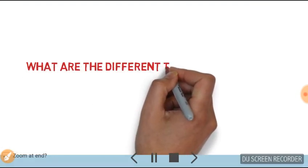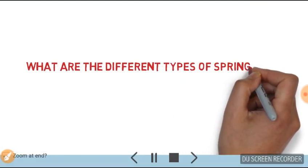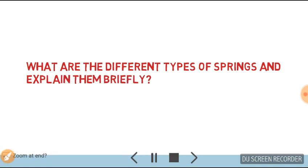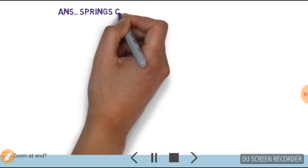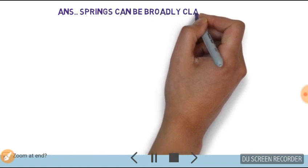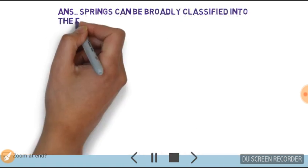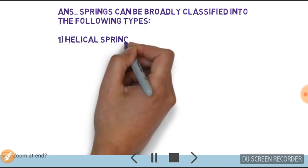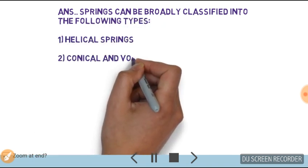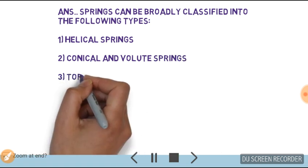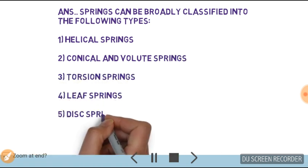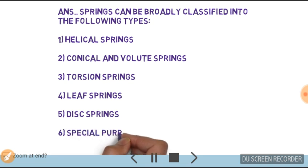The question is what are the different types of springs and explain them briefly. Springs can be broadly classified into the following types: first, helical springs; second, conical and volute springs; third, torsional springs; fourth, leaf springs; fifth, disc springs; and special purpose springs.